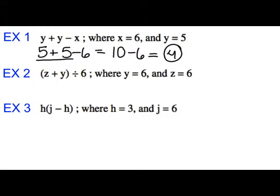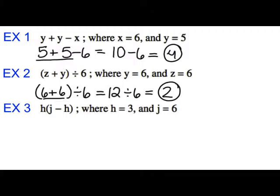Let's try example two using the same process. The quantity of z plus y divided by 6 where y is 6 and z is 6. So I start by substituting in the values I know, so z is 6 plus y is 6 divided by 6. Now in order of operations we do parenthesis first so I'm going to do 6 plus 6 first which is 12. So 12 divided by 6 thus giving you 2 as a solution.